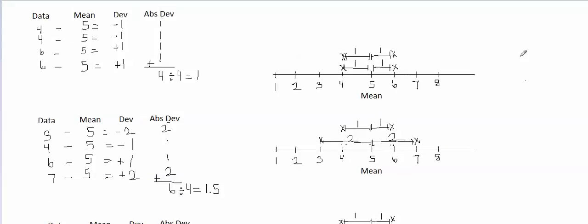Basically, the mean absolute deviation is the mean, or average, distance to the mean. As the data gets more spread out, the data is getting further away from the mean, and the average distance to the mean is getting bigger. When the data starts to get more spread out, the data moves further from the mean, which means the average distance to the mean gets bigger — which is why you get a larger mean absolute deviation when the data has more spread.